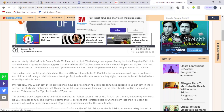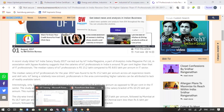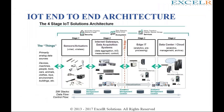Moving on to the technical side, we will discuss what we are going to cover in our training program. This is IoT end-to-end architecture. Here there are four stages, and there is no hard and fast rule defined for this IoT application architecture — some may define it as a three-stage flow, some as five-stage, some as four-stage. This four-stage architecture is the generic one.